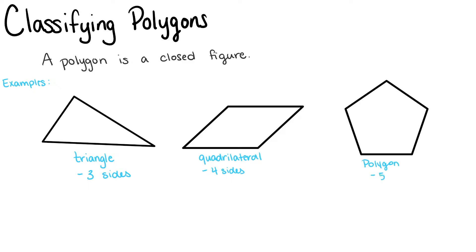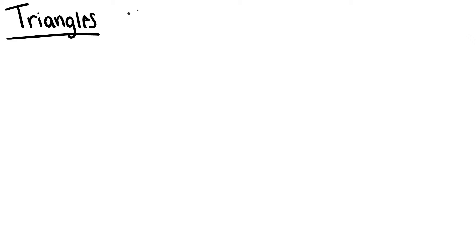We're able to give polygons specific names based on their sides and angle measurements. First, let's look at triangles. Triangles are polygons that have three sides, and the sum of their interior angles is 180 degrees.